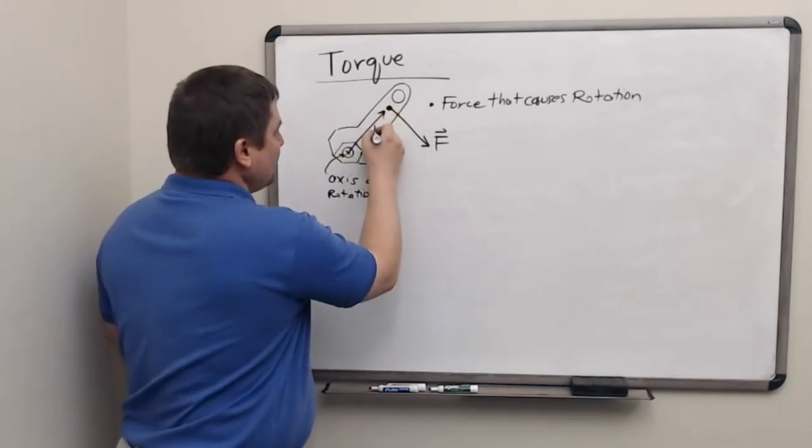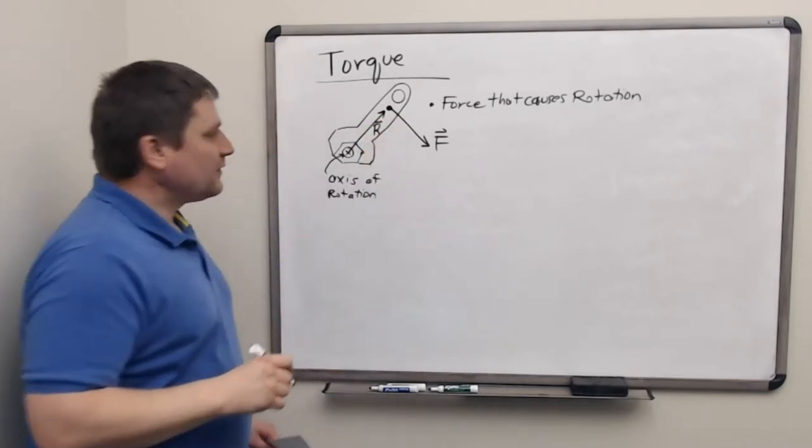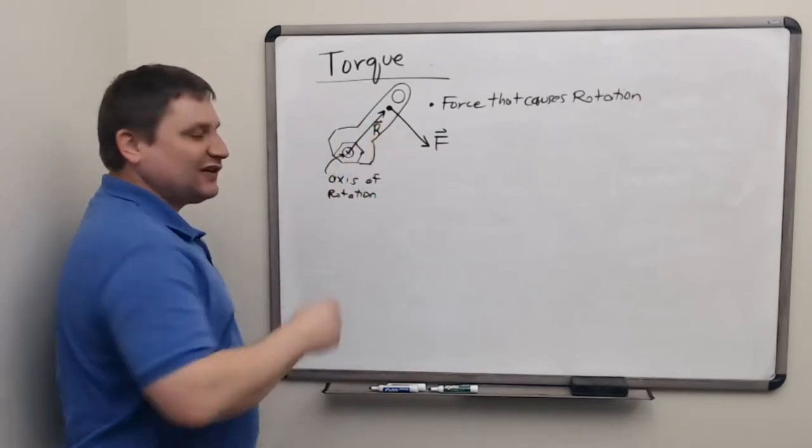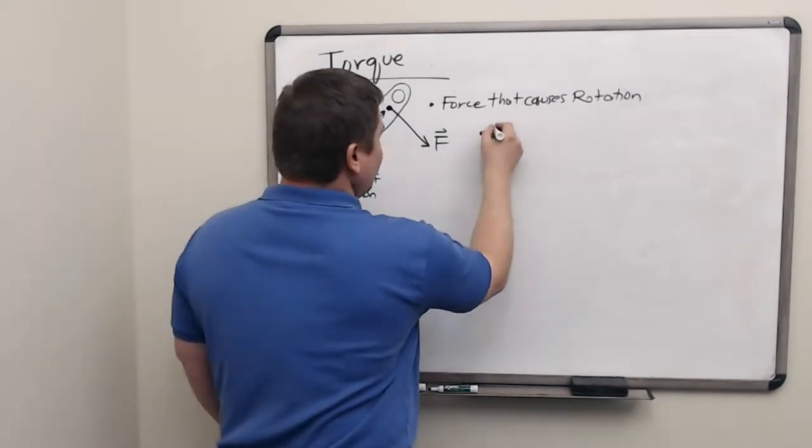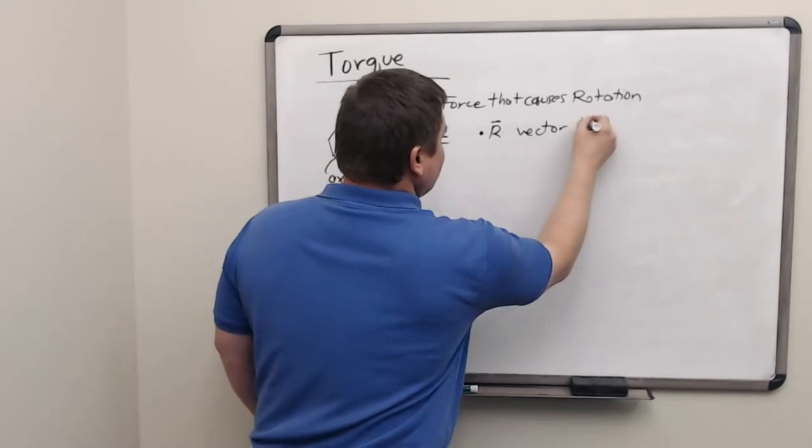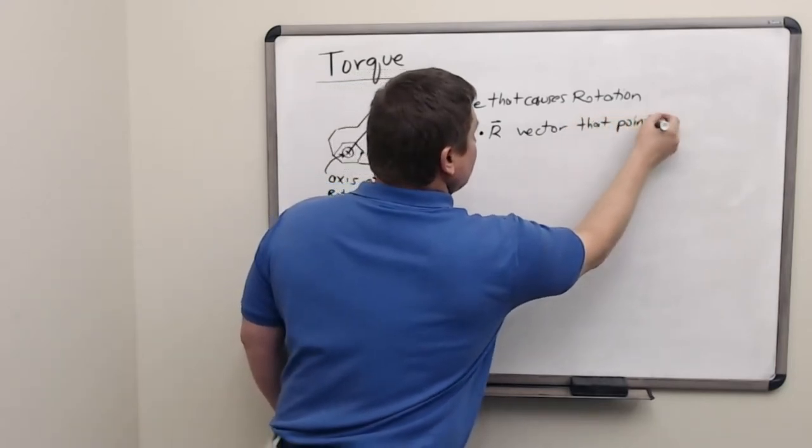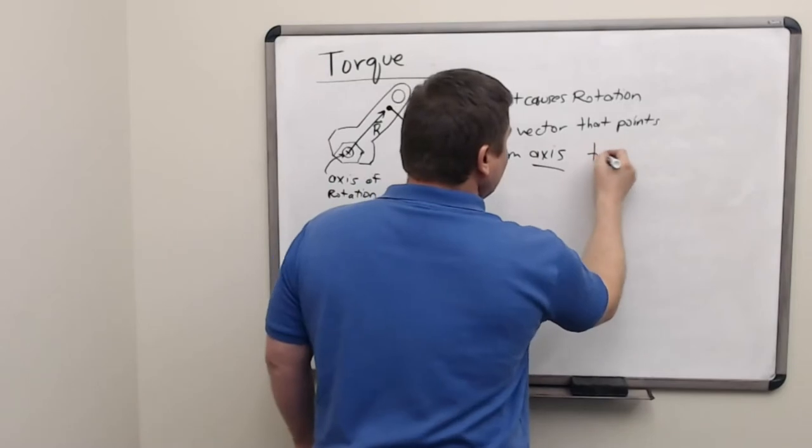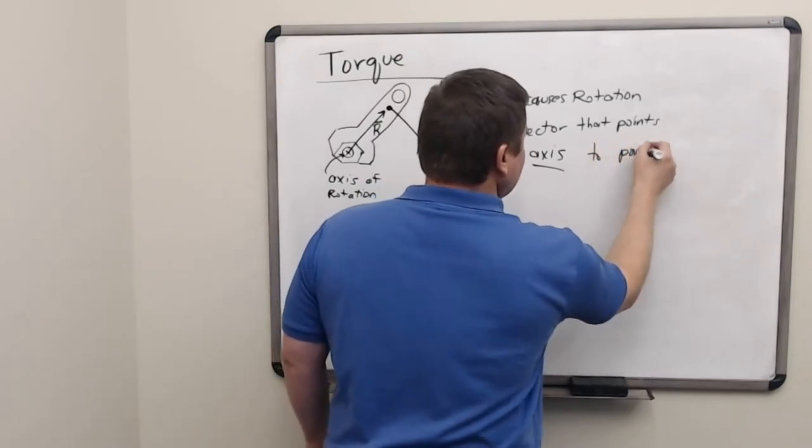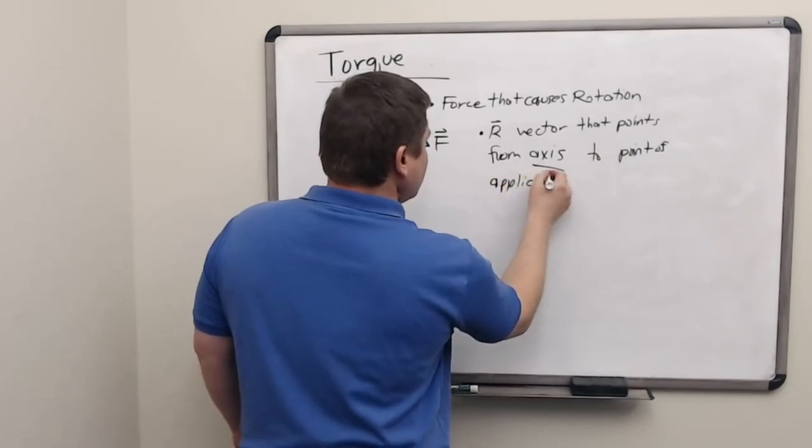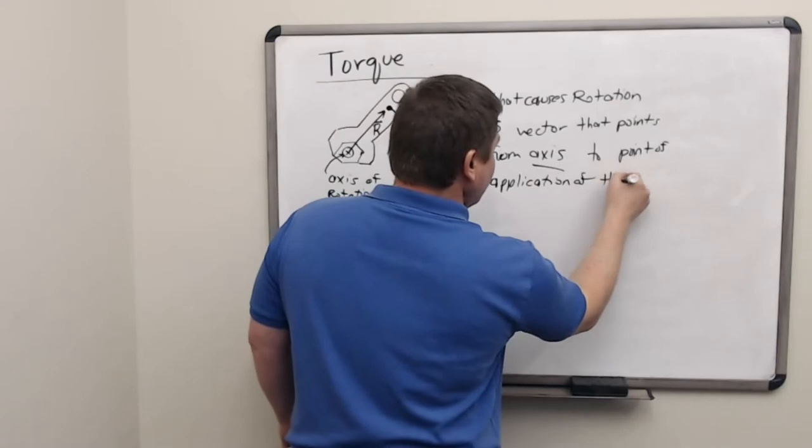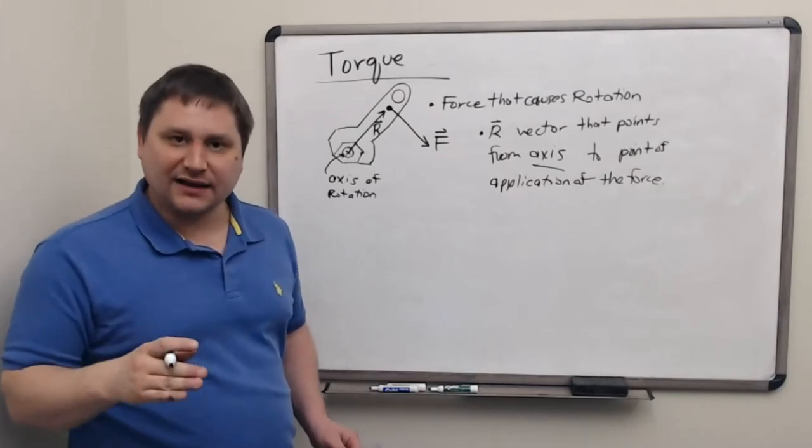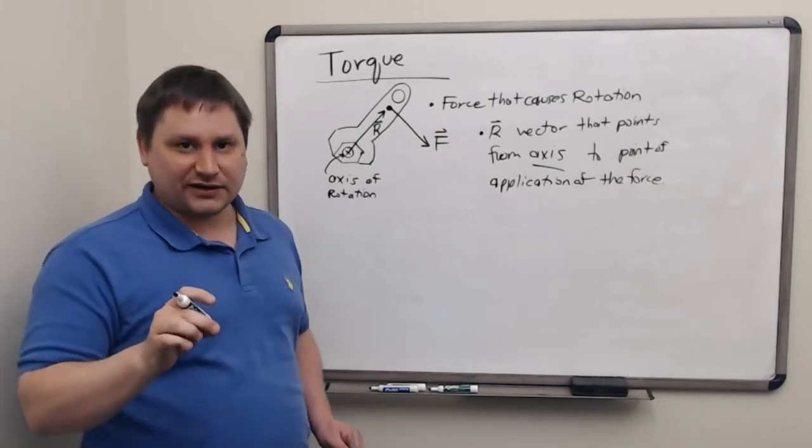Let's call the displacement between the axis of rotation and the point where the force is applied, a displacement vector r. So we'll define r in this diagram as a vector that points from the axis of rotation to the point of application of the force. So it's important where the force applied, but it's just as important where the object is going to rotate about.